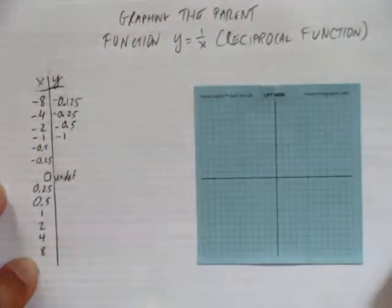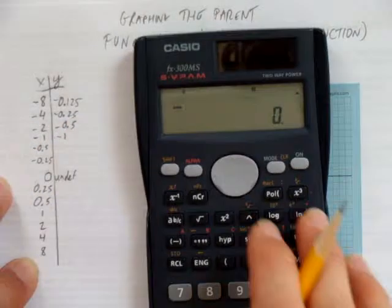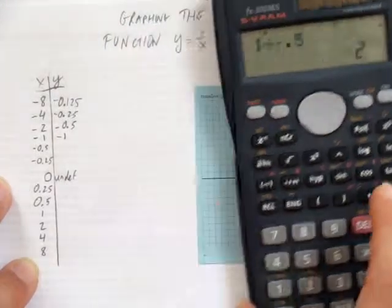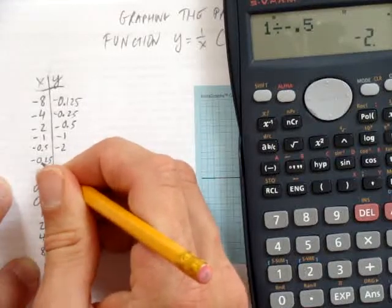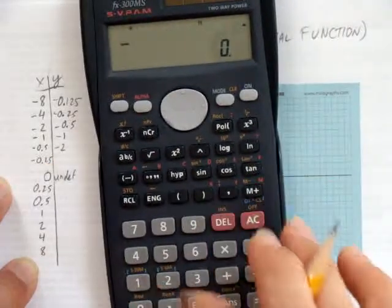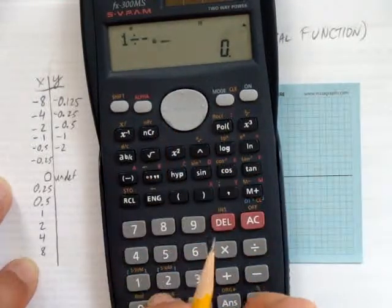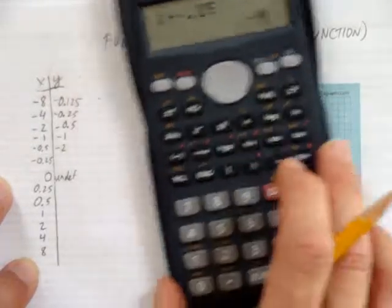Something interesting happens, though, when you're dividing by a decimal. What's 1 divided by negative 0.5? Negative 2. What's 1 divided by negative 0.25? 1 divided by negative 0.25, you get negative 4.